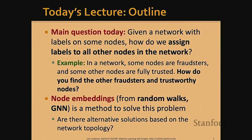Here's the outline for today's lecture. The main question we want to ask is: given a network with certain labels on some of the nodes, how do we assign labels to the rest of the nodes? For example, suppose there's a social network where we know some nodes are fraudsters and some are fully trusted — how do we find the remaining fraud nodes and trustworthy nodes?